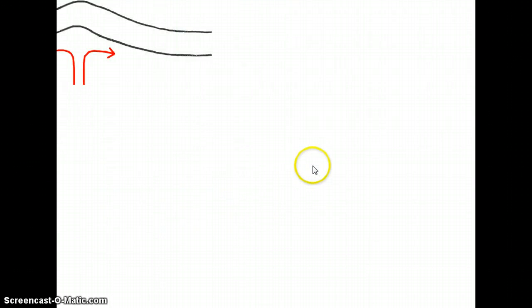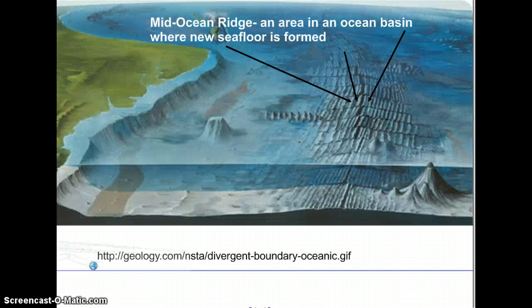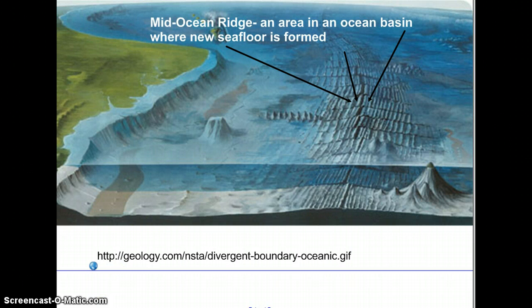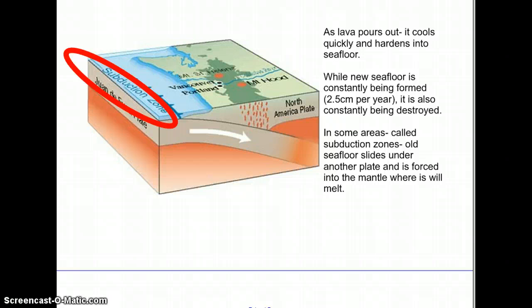Here is a description of the subduction zone. As lava pours out, it cools quickly and hardens into sea floor. While new sea floor is constantly being formed, 2.5 cm per year, it is also constantly being destroyed as it gets pushed under and into the mantle. In some areas called subduction zones, old sea floor slides under another plate and is forced into the mantle where it will melt.